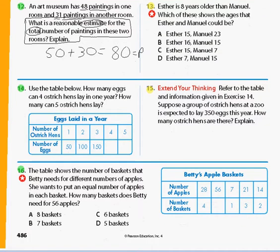Let's go ahead and look at problem number 14. It says use the table below. How many eggs can four ostrich hens lay in one year? How many can five ostrich hens lay? And we have a table here. I've got one can lay 50 eggs, two can lay 100 eggs, three can lay 150 eggs. Whenever we're doing something like this, if our table tells us how many one will lay, that's going to kind of clue us in on what the rule is. And I think it's probably going to be times 50. So my rule is going to be times 50.